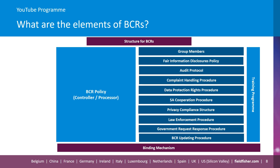Further appendices include a cooperation procedure setting out how BCR group members will cooperate with supervisory authorities, a privacy compliance structure setting out how compliance with BCRs and data protection laws will be managed, a law enforcement structure, a government request response procedure setting out how group members must respond if a non-EU government requests personal data protected under the BCRs, an updating procedure describing how changes to the BCRs will be communicated, and a description of the training programme for BCR members and staff. Last but not least, there needs to be a binding corporate mechanism — often an inter-group agreement, known as an IGA — which ensures the BCRs are binding on each member.